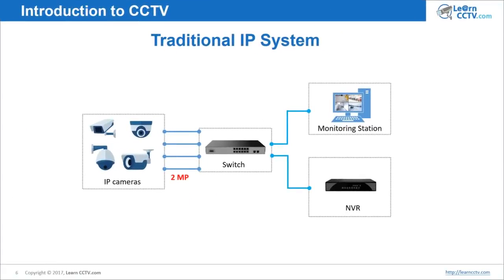In this case, I have a two megapixel camera. I no longer talk about TV line resolution because now it's digital resolution, measured in pixels and megapixels. For example, I have a two megapixel camera, and I can record that two megapixel image in the NVR and also display it on my monitoring station. Then I start recording in my NVR.